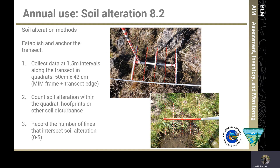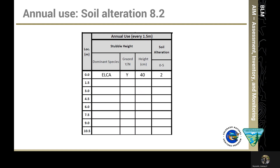The next step is to count soil alteration within the quadrat. Soil alteration is any kind of soil disturbance that has occurred during the current year. Examples include hoof prints, human footprints, tire tracks, and any kind of recent soil disturbance where shearing and soil disturbance has occurred. Count the number of lines that intersect any kind of soil alteration and record that number — your count can be anything from zero to five. On the paper data sheet, record that number in the rightmost column under soil alteration; in this example the number was two.